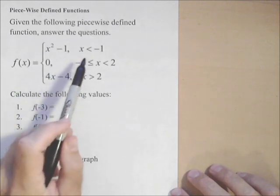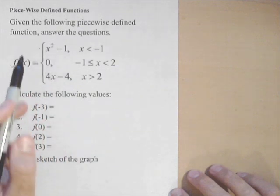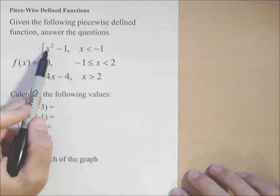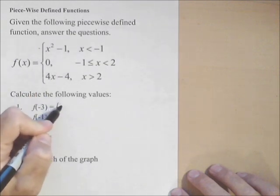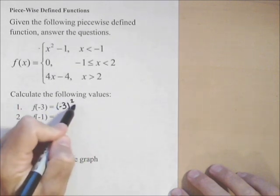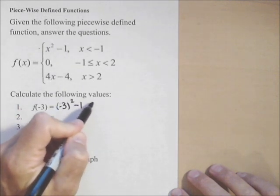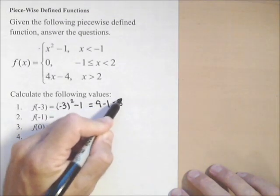Negative three is less than negative one, so we're going to use this first piece. The function when x is less than negative one looks like x squared minus one, so we would have negative three squared minus one, or nine minus one, which is equal to eight.